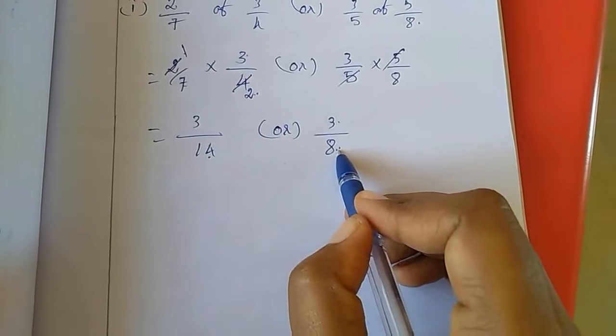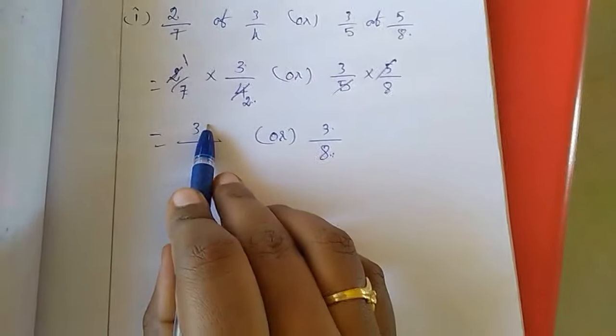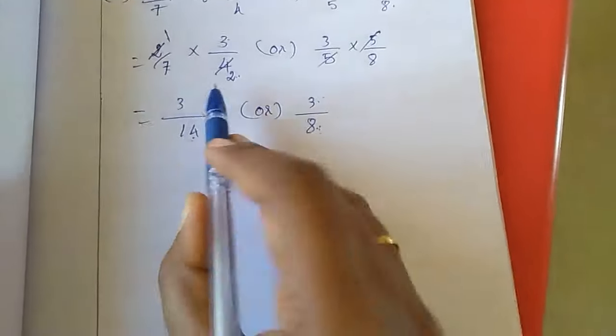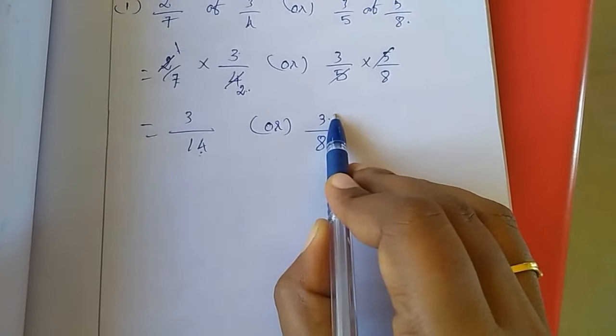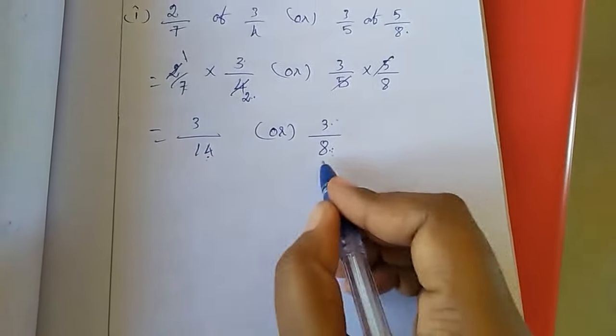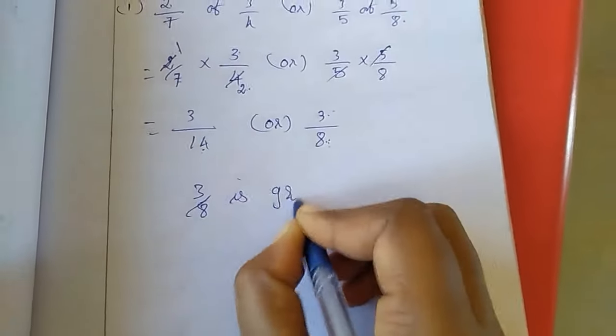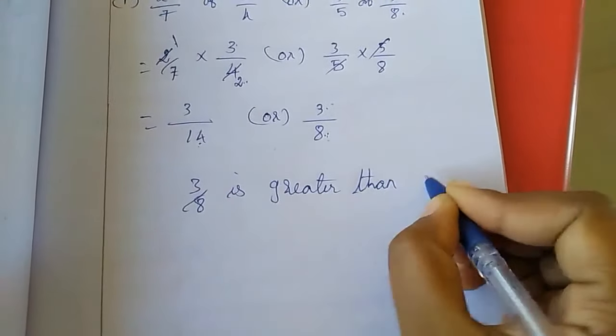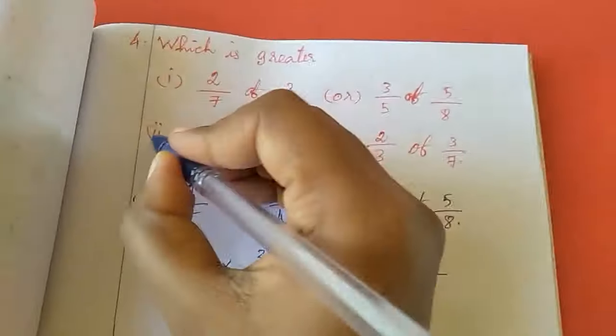3/8 is greater. You just think about the cake: 14 pieces versus 8 pieces. So 3/8 is greater than 3/14. Like this you have to compare. 2nd sum is homework for you.